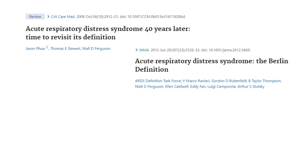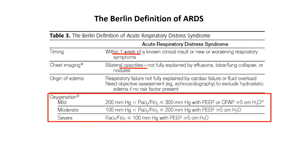This definition was criticized by Fuwa et al., and in 2012 the Berlin definition was published in JAMA. Based on the Berlin definition, timing should be within one week of a known clinical insult or new or worsening respiratory symptoms. On chest imaging, there should be bilateral opacities not fully explained by effusion, lobar or lung collapse, or nodules.